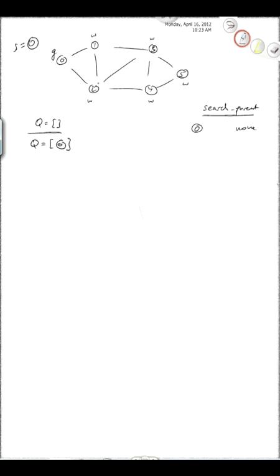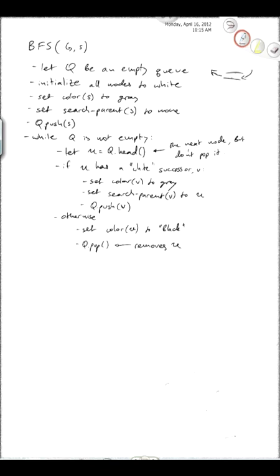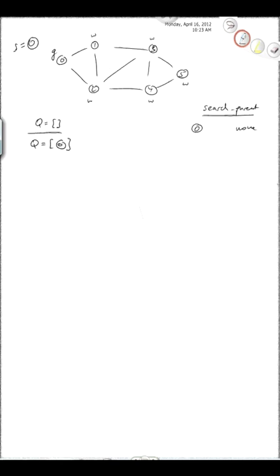The algorithm doesn't specify which one you have to process next, so you can do whichever you want. For the purposes of this class example, let's process the lower-numbered one first, so we're processing node 1. Since 1 is a white successor we've found, we have to set its color to gray, set its search parent to 0, and push it onto the queue. So here it is: 0 and 1 are now on the queue.